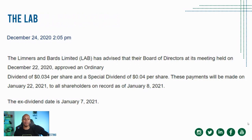We're going to use an example here of The Lab. There was a notice released on December 24th, 2020. It stated that the Limners and Bards Limited board of directors, at its meeting held on December 22nd, approved an ordinary dividend of 0.034 cents per share and a special dividend of 4 cents per share. These payments would be made on January 22nd to all shareholders on record as of January 8th, 2021, with an ex-dividend date of January 7th, 2021. There's a lot of information here that will help you understand how a dividend works and when you're going to get paid.